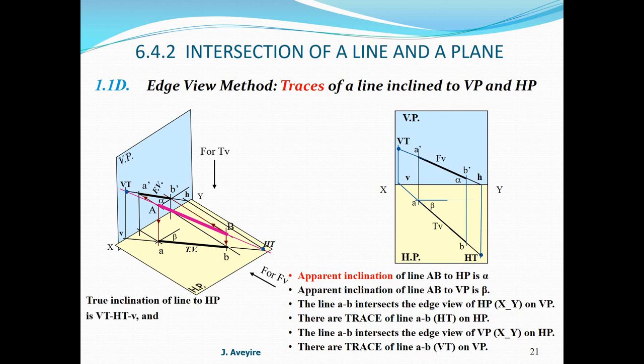The true inclination of the line to HP is the angle formed by points VT, HT, and V. The true inclination of the line to the vertical plane is the angle formed by points H, VT, and HT.